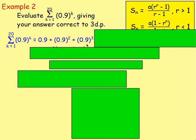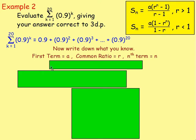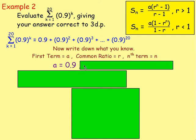You keep going until you sub in 20 — the number at the top is where you finish, so you'd have 0.9 to the power of 20. That series is 0.9 plus 0.9 squared plus 0.9 cubed and so on. We want to find the sum. In the formula you've got a, r, and n, so write down what you know. The value of a is 0.9 — that's the first term.